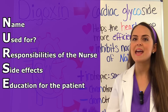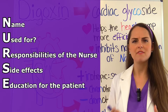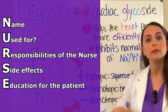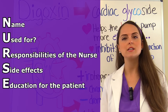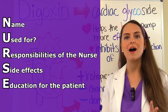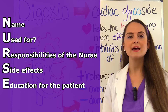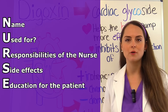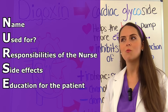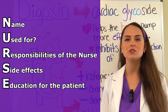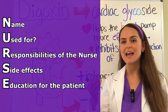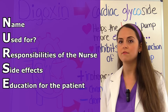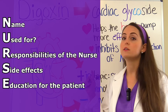Number one, what's the name of the drug — specifically that family name, what drug category does this drug fall into, because that's going to tell you a lot about how that drug works. Next, ask yourself what is this drug used for, and that's going to tell you why you're giving this medication to the patient. They have some type of condition that the physician feels the patient would benefit from this drug.